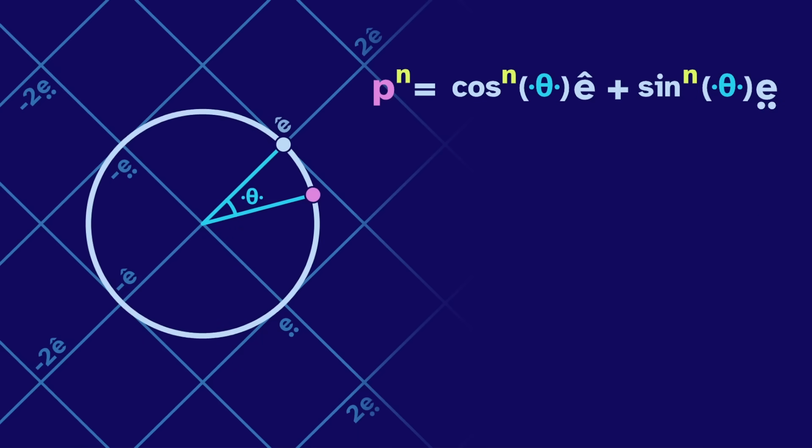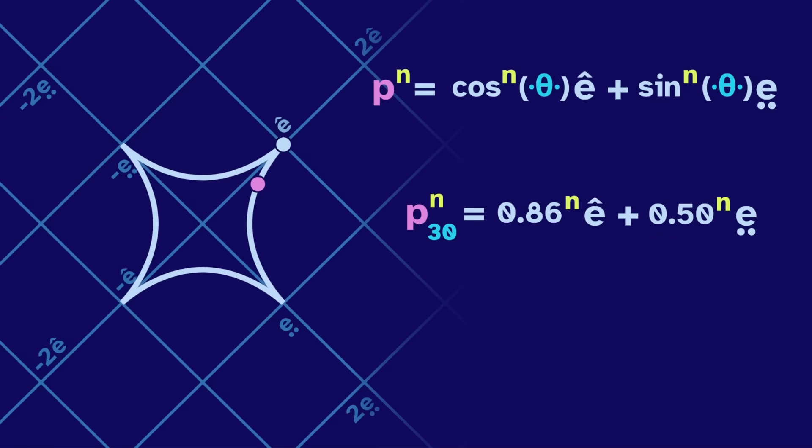And a point between the horizontal and diagonal, like where theta gloves is 30 degrees, will have different values. They both approach zero, but the e hat shrinks slower, so the point also approaches the diagonal. This is why we see an x.